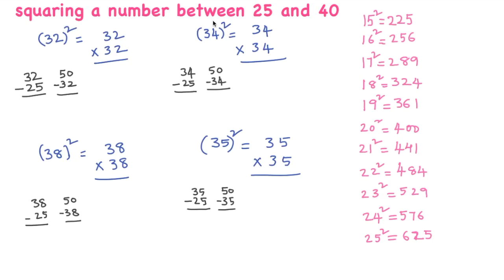Squaring a number between 25 and 40. Between 25 and 40, see here, 32 square. To calculate 32 square, you have to keep two things in your mind: one is 25, another one is 50. 32 minus 25 is 7, so you write 7 here. 50 minus 32 is 18.